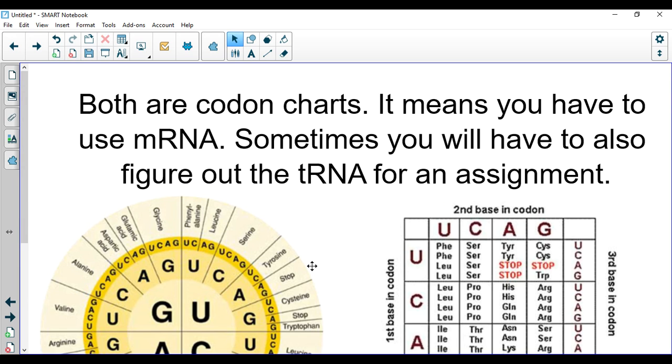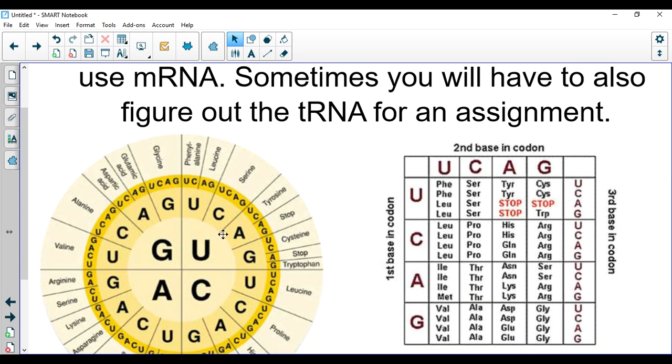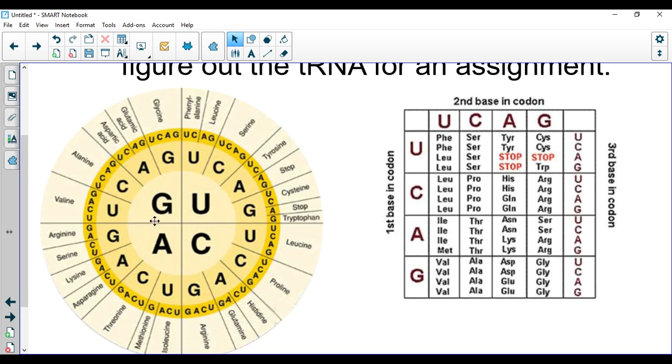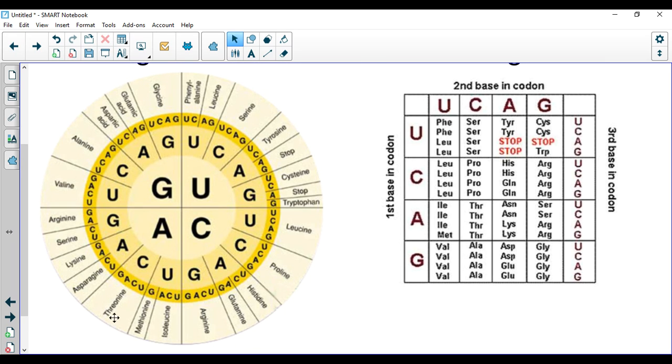These are codon charts, which means you always have to use your mRNA code. Do not use your tRNA code. That would be an anti-codon chart. When we look at this, with the circular chart, we start from the inside and we work out. So remember I told you the start codon was AUG. A, work out. U, work out one more time. G, methionine. That is our first and starting codon. That is an amino acid, methionine. That codon gives rise to this.